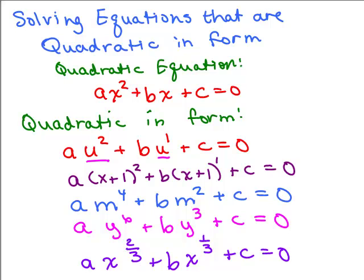Just to remind you about what it means to be quadratic in form, this is the general form of a quadratic equation. To be quadratic in form, if you look at the exponent of the variable for the middle term, if you double the exponent, that's what will be on the first term. And so we do a little u substitution. In these cases, I would let u be x plus 1. Second example, u would be m squared. The third one, u would be y cubed. And the fourth one, u would be x to the 1 third. So now we're going to try it on this next problem.